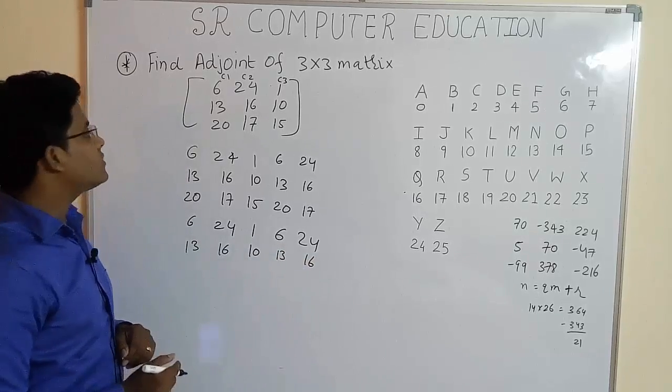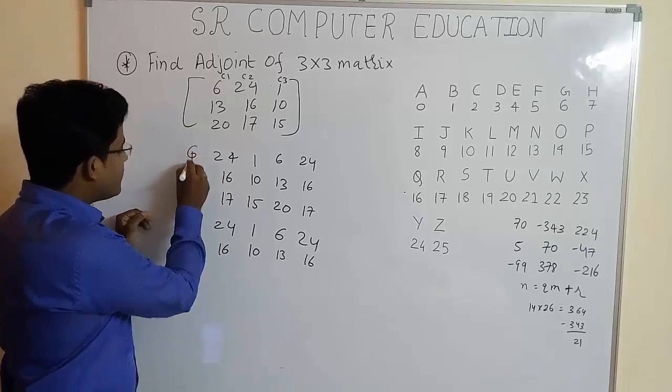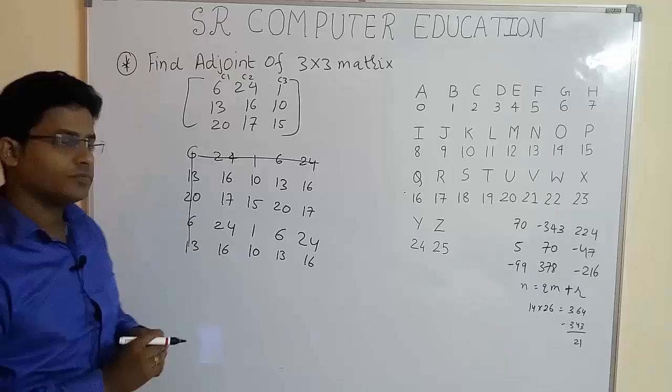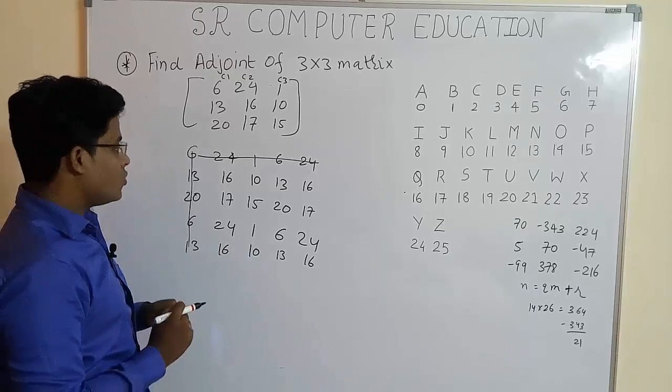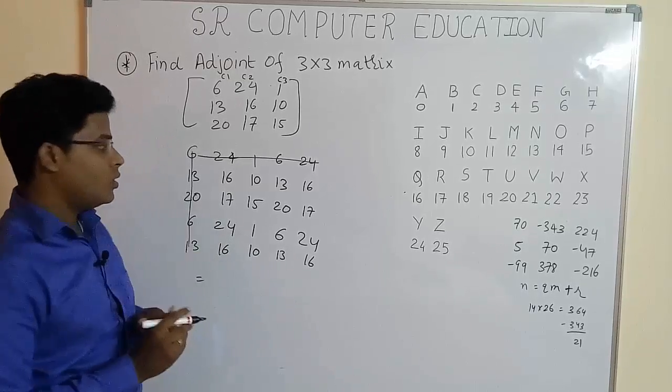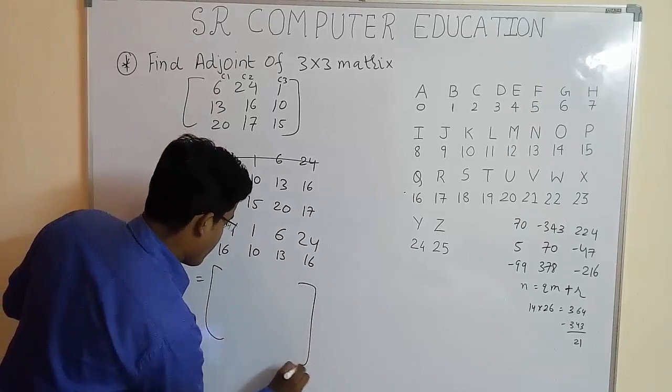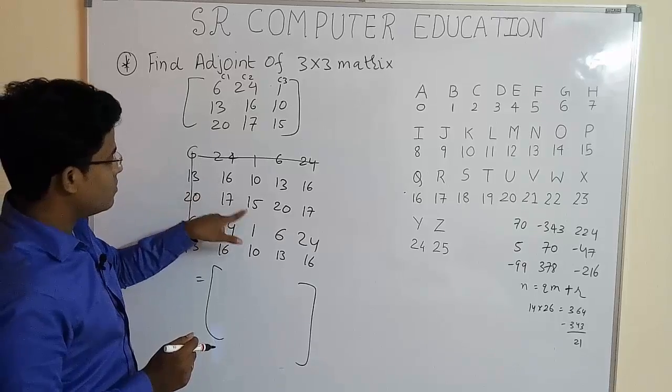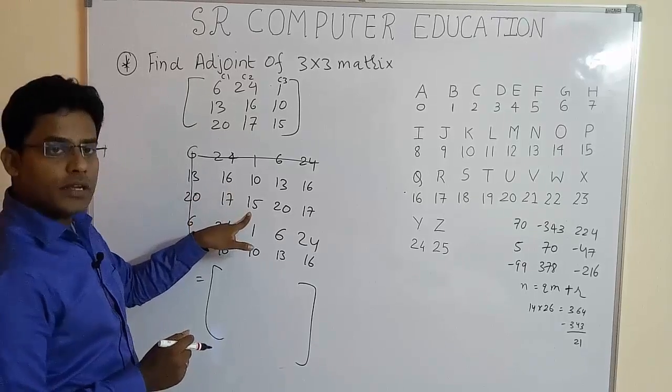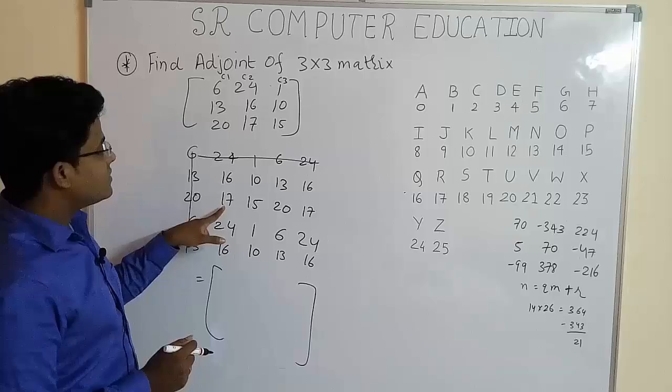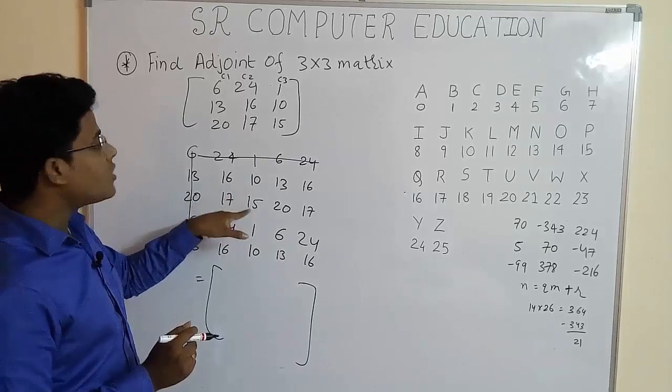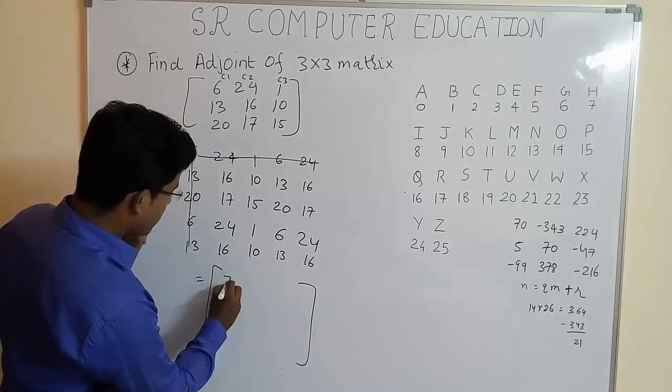Now, the third step is you have to cancel out the first column and the first row. Now, what you have to do? You have to multiply these two numbers. 16 multiply by 15 minus 17 multiply by 10. Whatever answer you have to write here.